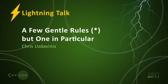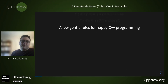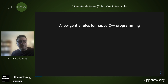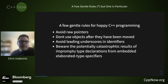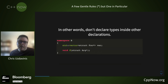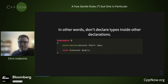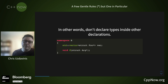These are a few general rules that everyone should know and be aware of. Void raw pointers, don't use objects after they've been moved, avoid leading underscores in identifiers, and beware of potentially catastrophic results of impromptu type declarations from embedded elaborated type specifiers. These are elaborated type specifiers and they can be very problematic. This idiom came from C compatibility and shows up in strange places in C++ grammar and is best avoided when possible.